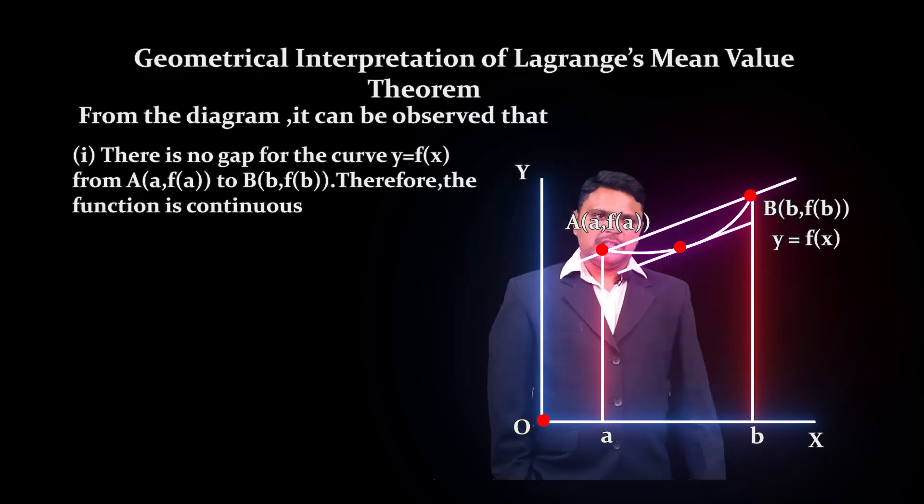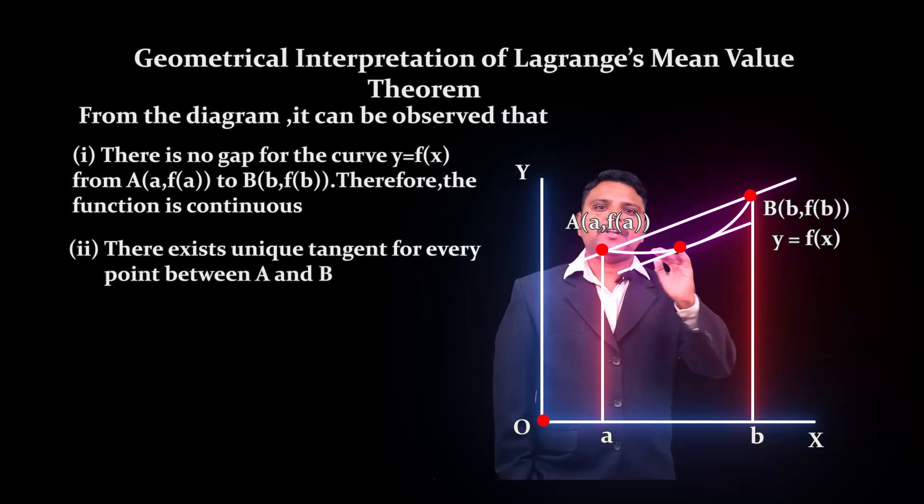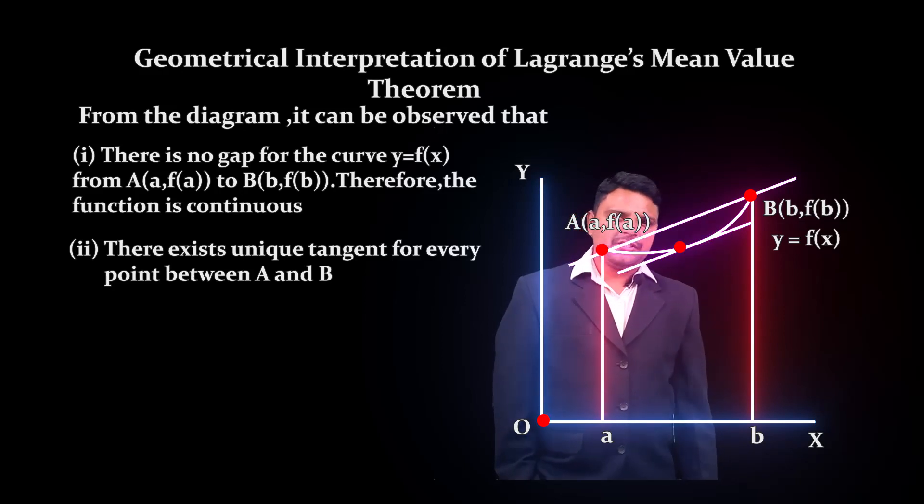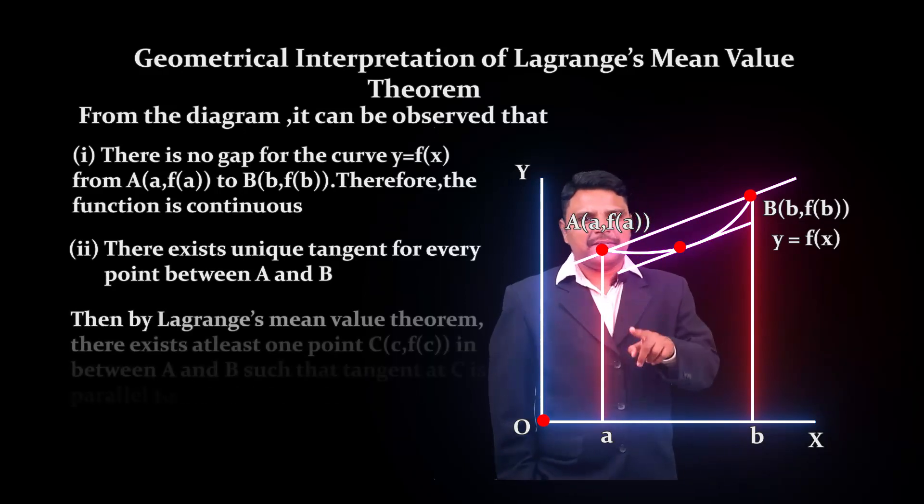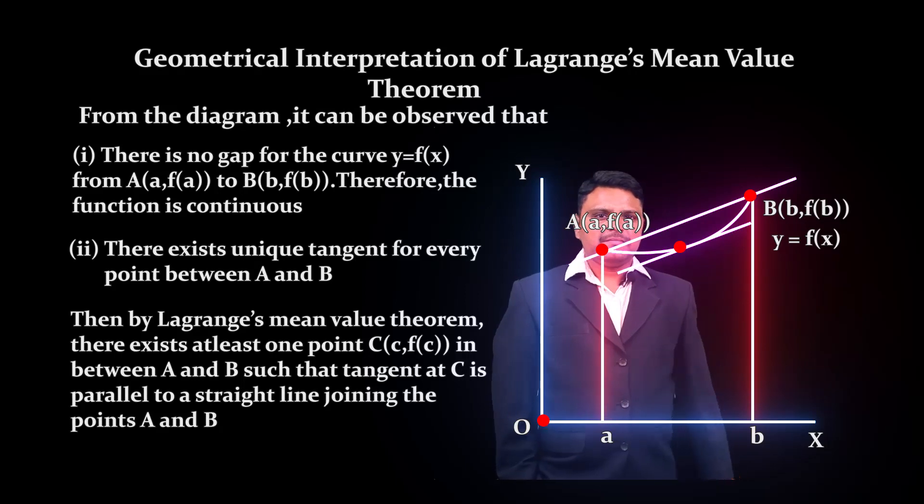According to the conditions of Lagrange's Mean Value Theorem, there exists at least one element between a and b. In this diagram, between a and b, I am taking c. The ordinate of c is f(c). Therefore, point C on the graph is (c, f(c)).